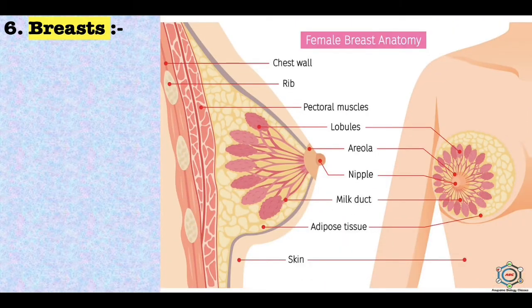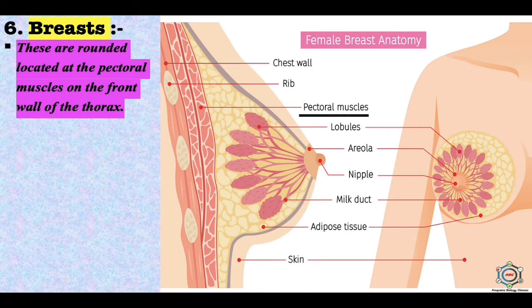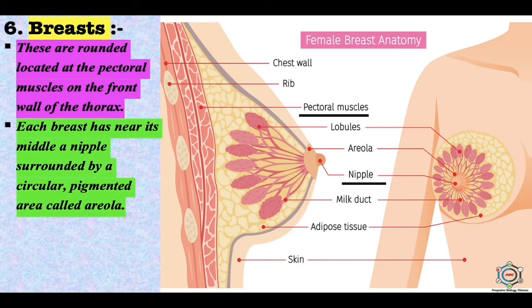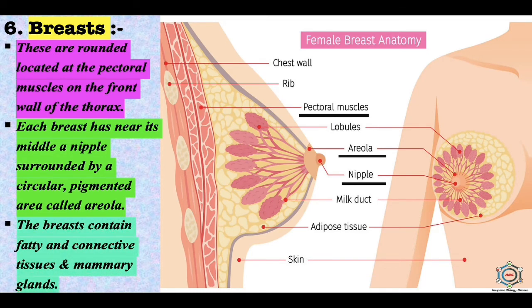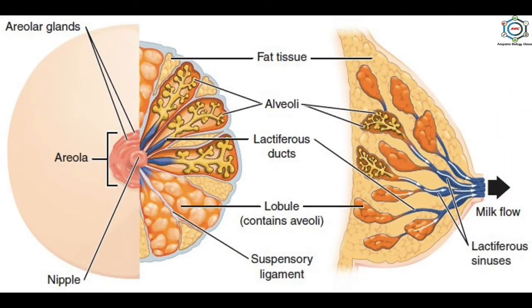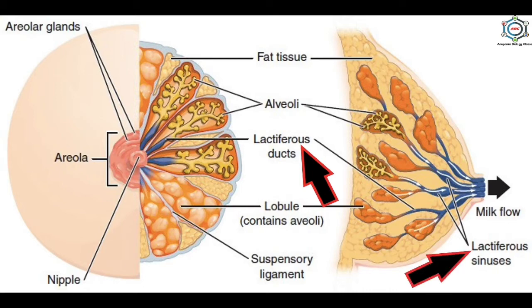The breasts are rounded structures located on the pectoral muscles on the front wall of the thorax. Each breast has a nipple near its middle, surrounded by a circular pigmented area known as the areola. The breast contains fatty and connective tissues and the mammary glands, also known as milk glands. The mammary glands open into the nipples by lactiferous ducts, which open into lactiferous sinuses to store milk during lactation. A nursing mother produces 1 to 2 litres of milk per day.